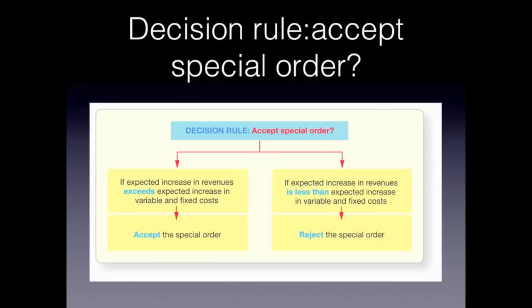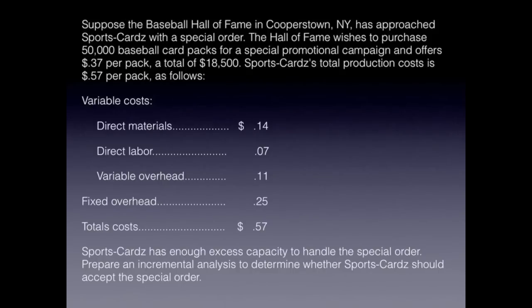Let's take a look at an example. Suppose the Baseball Hall of Fame in Cooperstown, New York has approached Sports Cards with a special order. The Hall of Fame wishes to purchase 50,000 baseball card packs for a special promotional campaign and offers 37 cents per pack, a total of $18,500. Sports Cards' total production cost is 57 cents per pack: direct materials 14 cents, direct labor 7 cents, variable overhead 11 cents, and fixed overhead 25 cents — for a total cost per pack of 57 cents.